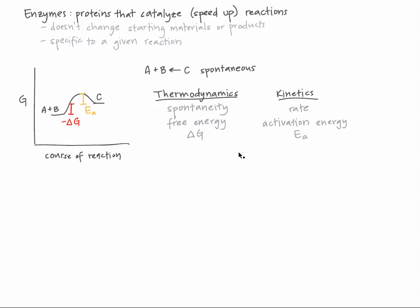As a summary, here's the difference between thermodynamics and kinetics. Thermodynamics deals with spontaneity, and thus with free energy and delta G. Thermodynamics only tells us about the free energy of the starting materials and the products — it tells us whether a process would, if it could, proceed in one direction or the other. Thermodynamics tells us nothing about the path between the beginning and the end, or about the rate at which the process happens. Kinetics, on the other hand, deals with rate of reaction, and thus with activation energy. Kinetics tells us something about the path between the start and the end, and allows us to understand the speed at which a process occurs.